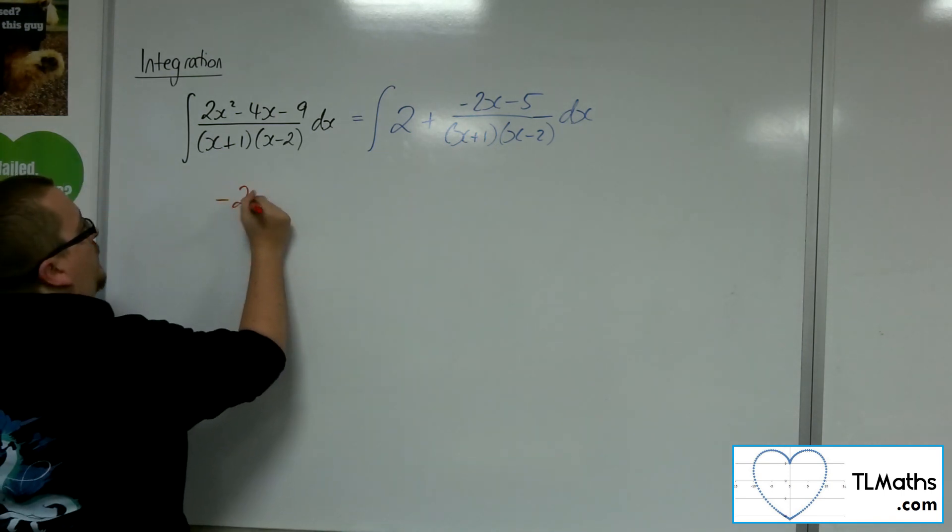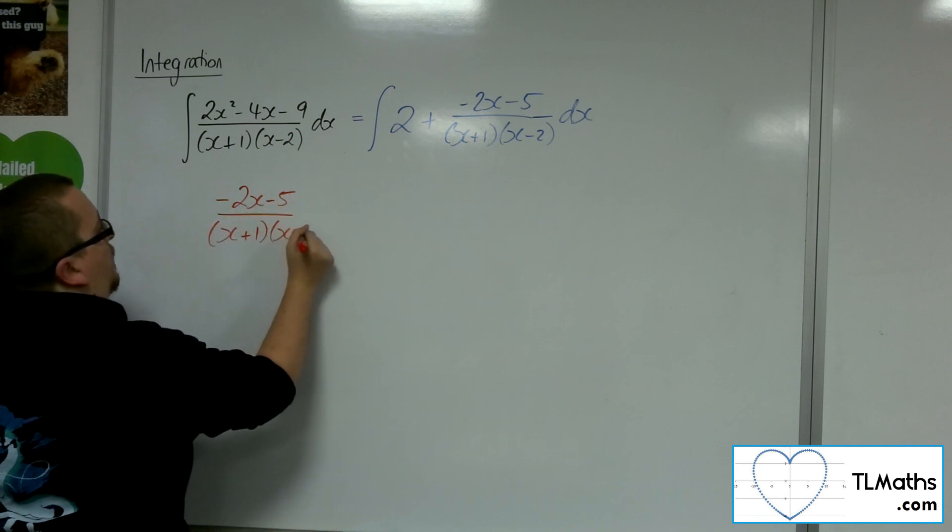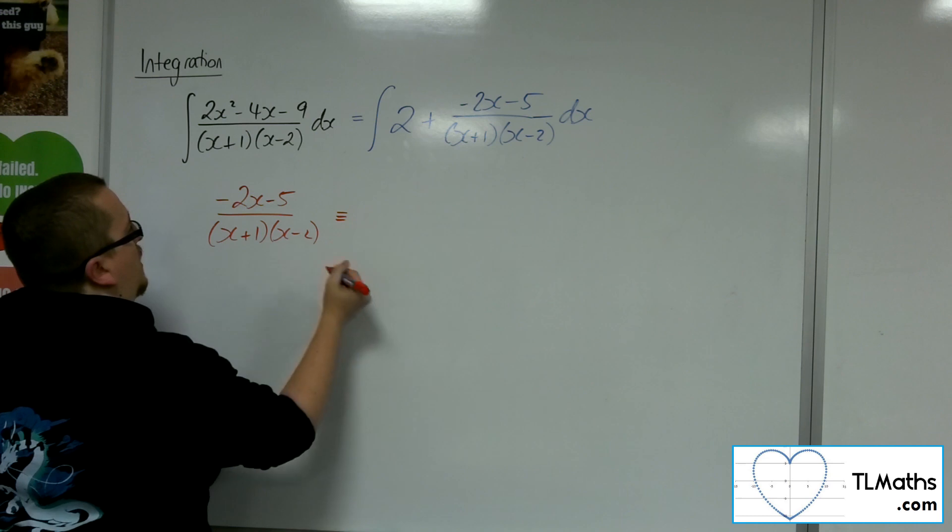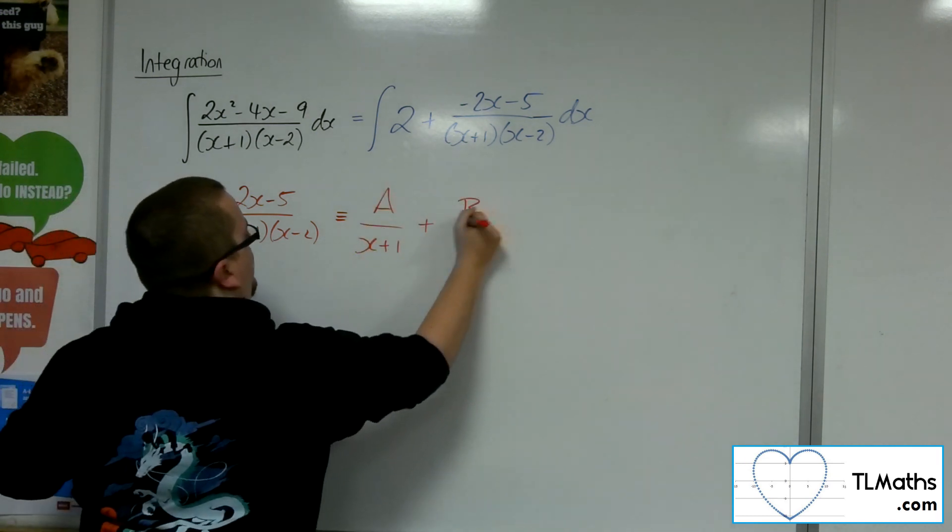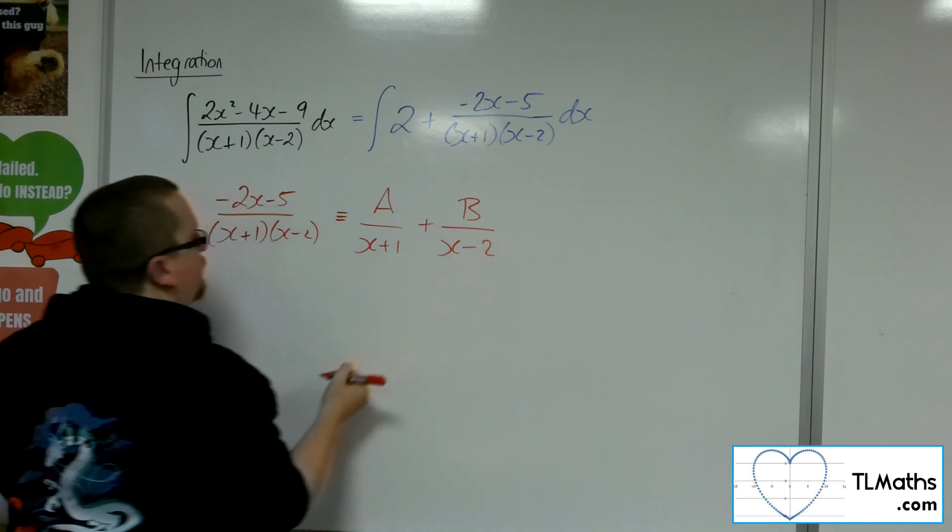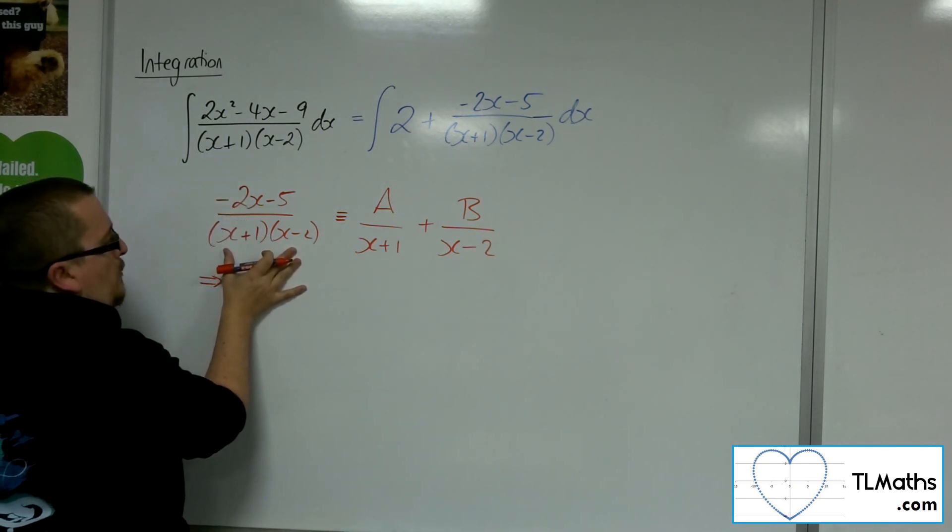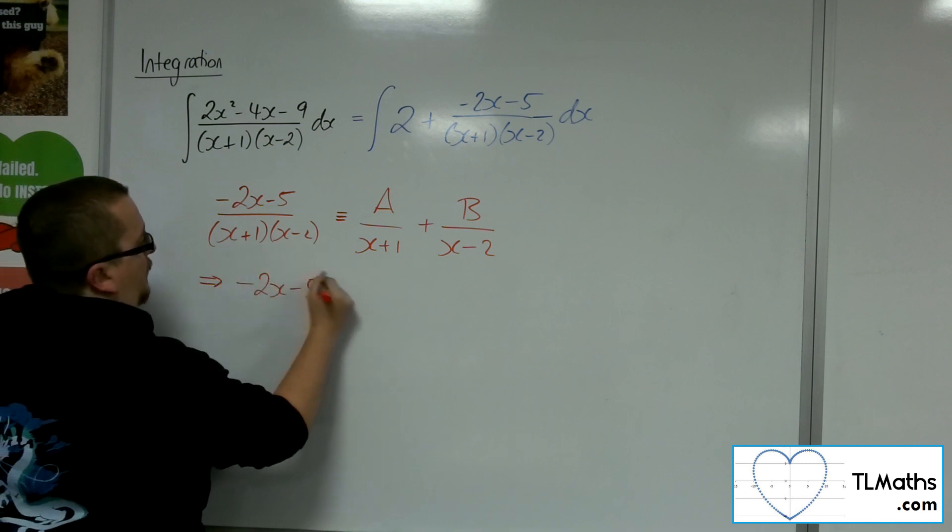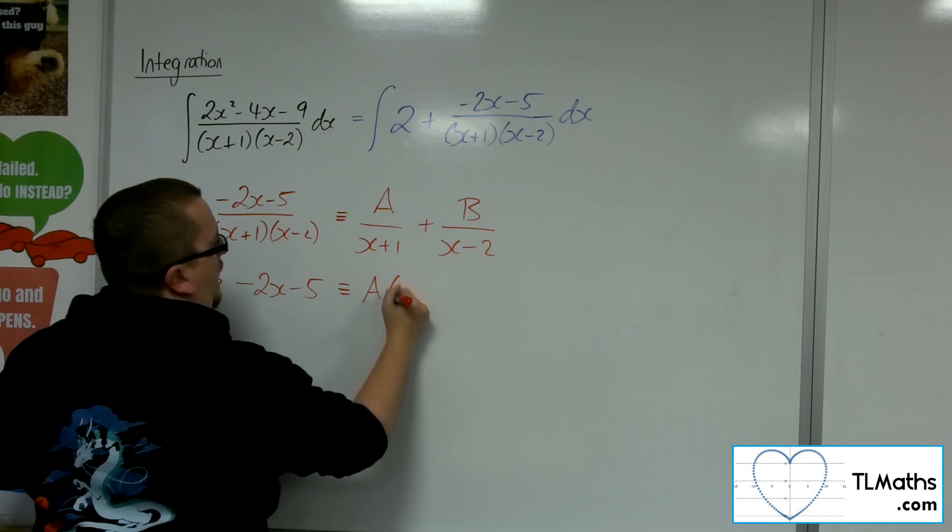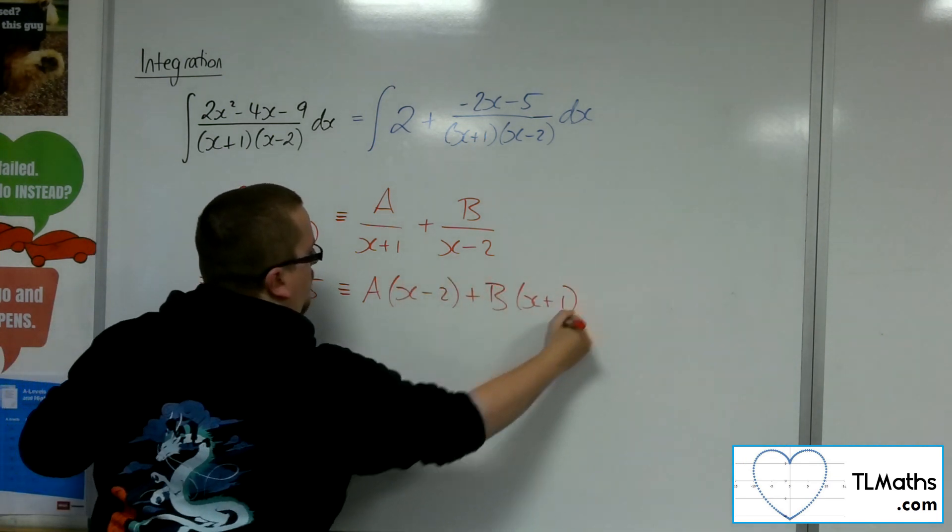So the minus 2x minus 5 over x plus 1x minus 2 will be equivalent to a over x plus 1 plus b over x minus 2. So remember your next line of working, multiplying both sides by the x plus 1, x minus 2 will be minus 2x minus 5 is equivalent to a lots of x minus 2 plus b lots of x plus 1, just as we've always done.